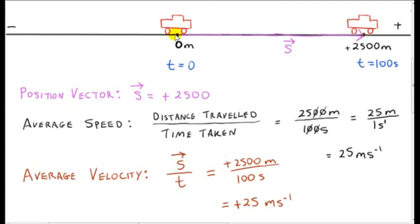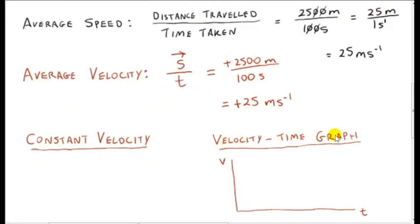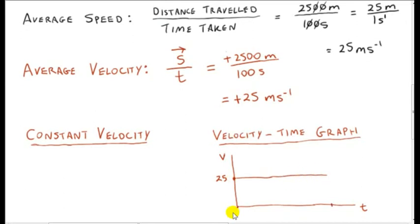We still haven't mentioned anything about how the velocity of the car changed as it moved from 0 meters to plus 2500 meters. Let's consider the simplest situation: constant velocity. This means that when t was 0, the car had a speed of 25 meters per second, and it maintained that speed for the entire journey — it didn't speed up or slow down. Let's look at the velocity-time graph for such motion. Velocity is the vertical axis, so we go to 25 on the v-axis. At t equals 0 the speed is 25 meters per second to the right, and for all subsequent times the speed is 25 meters per second, so the graph will be a horizontal line, at least for times between 0 and 100 seconds.